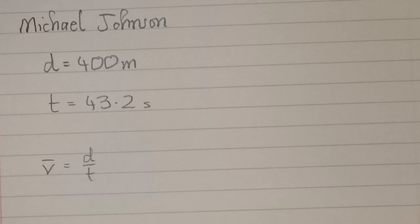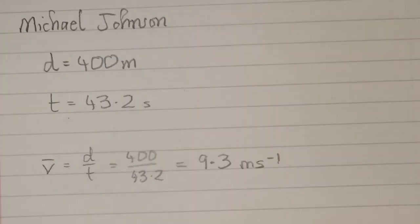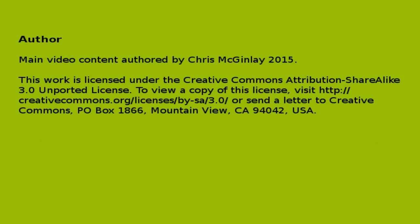And finally, Michael Johnson, in the 400 metre sprint, a distance of 400 metres, time 43.2 seconds, approximately. So V-bar equals d over t, 400 divided by 43.2, which is equal to 9.3 metres per second.